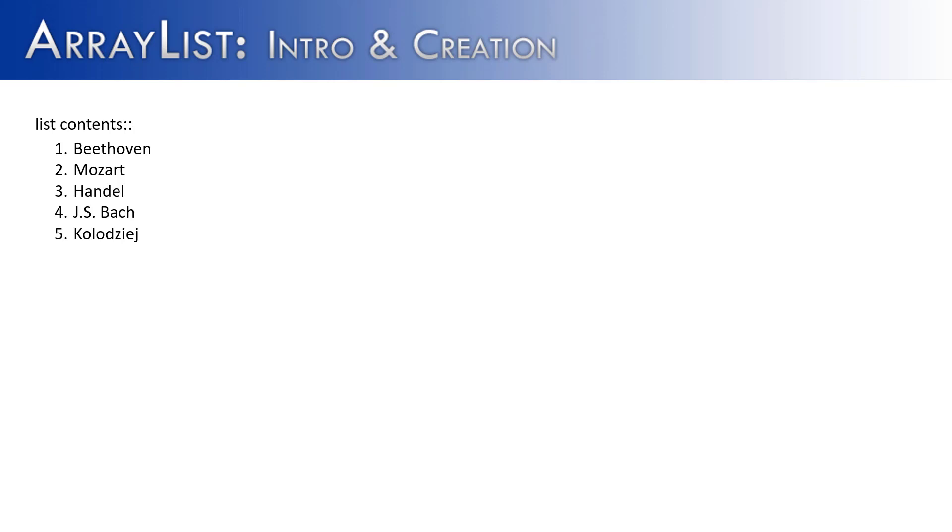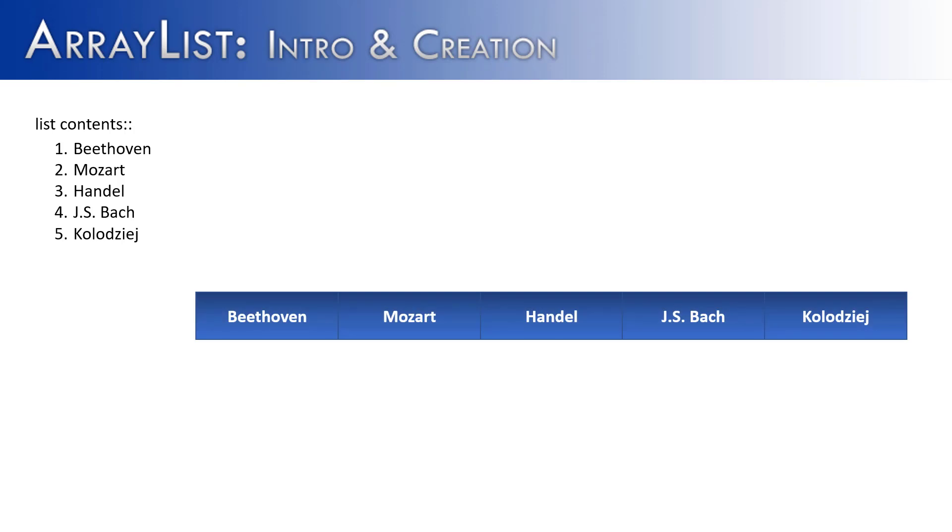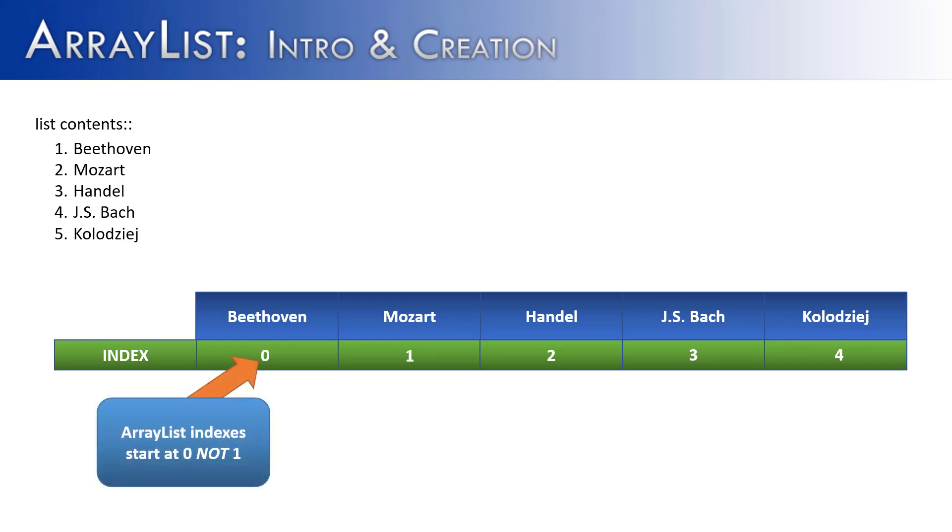Now, if I wanted to put them into an ArrayList, the ArrayList would look something like this. Every single element in the list having its own cell. And then there would be an index associated with every element in the cell.